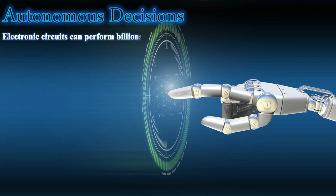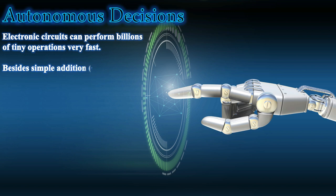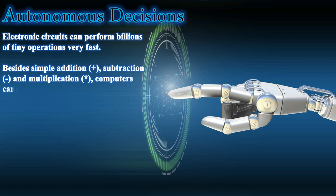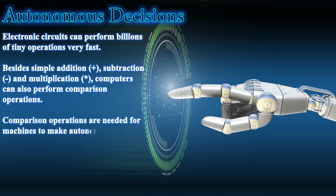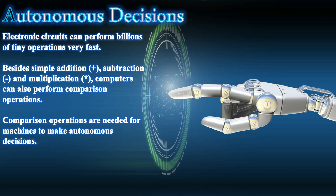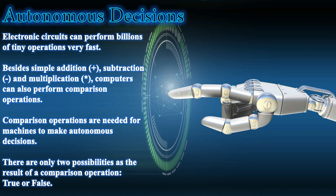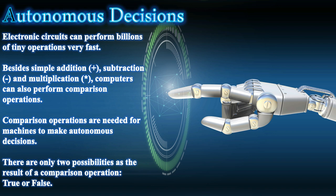Autonomous decisions: electronic circuits can perform billions of tiny operations very fast. Besides simple addition, subtraction, and multiplication, computers can also perform comparison operations. Comparison operations are needed for machines to make autonomous decisions. There are only two possible results of a comparison operation: true or false — which means true is 1 and false is 0.